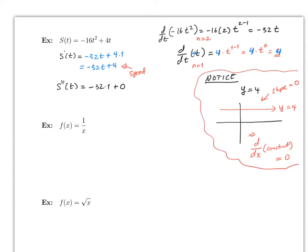So therefore here the second derivative is the acceleration. The derivative of position is the speed, and the second derivative is the acceleration.